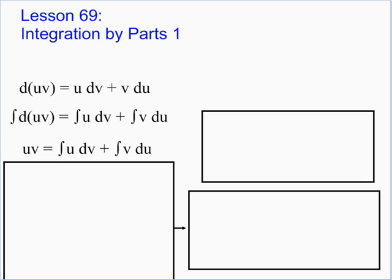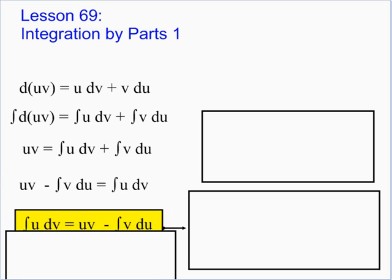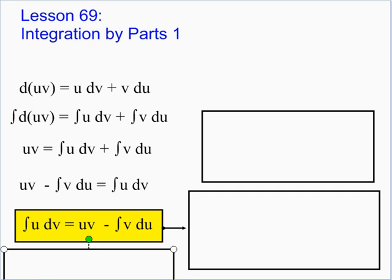On the right side we have these two integrals added together. We're going to solve for the integral of u dv by subtracting the other integral from both sides. Then using the symmetric property and turning the equation around, we have the integral of u times dv equals u times v minus the integral of v du. This is an important equation to know. We're going to be using this for integration by parts.